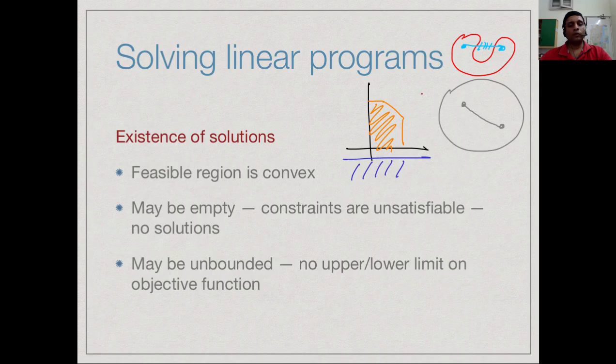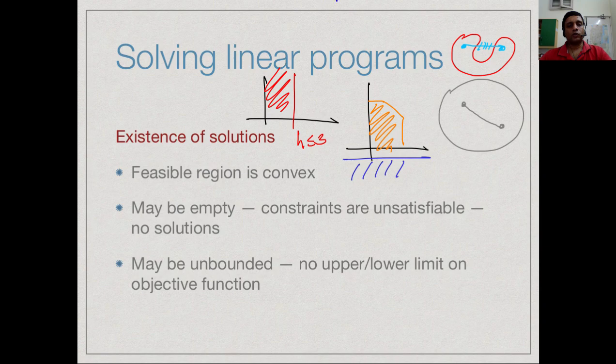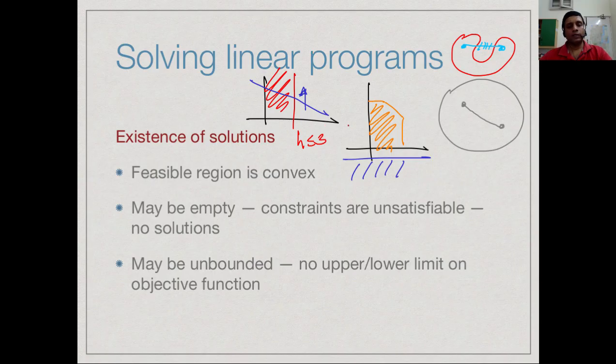The other possibility is that we do not constrain it enough. We could just say that supposing we only say that h must be less than 300. Then this has an unbounded region. So as I draw my blue line as we had done before and I keep moving it up, the profit keeps increasing. There is no upper bound. So there are these pathological cases where either the feasible region is empty or it is unbounded where you will not find a solution. But if it is bounded, then what the theory of linear programming tells us is that the objective function's maximum or minimum will lie on a vertex along the boundary of that bounded region and so it is sufficient to examine those and that is what simplex does.